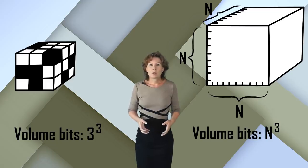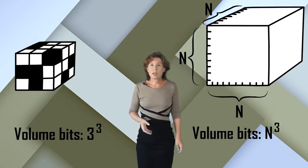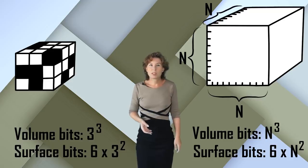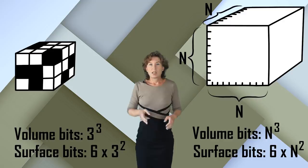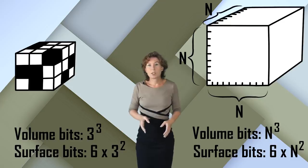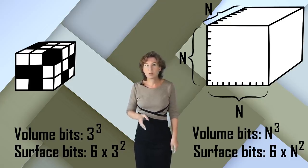But if you instead count the surface elements of the cube at the same resolution, you have only six times n squared. This means that for large n there are many more volume bits than surface bits at the same resolution. The holographic principle now says that even though there are so much fewer surface bits, the surface bits are sufficient to describe everything that happens in the volume.